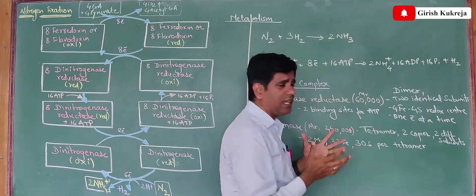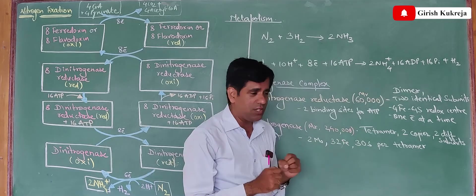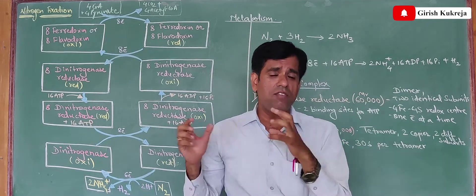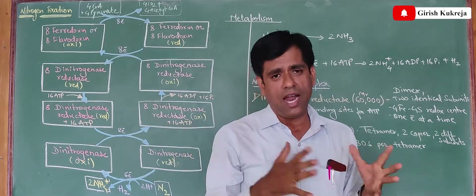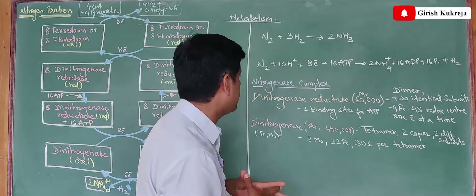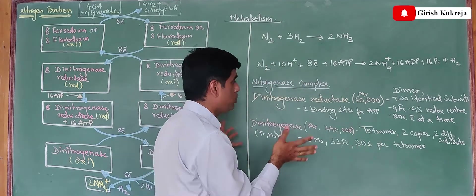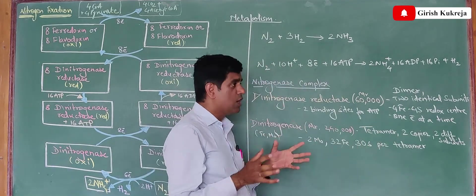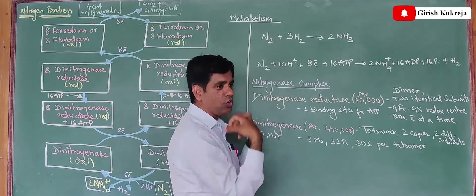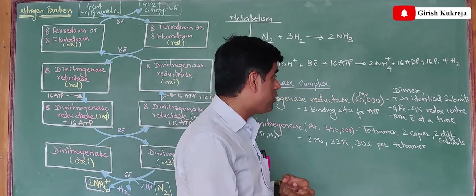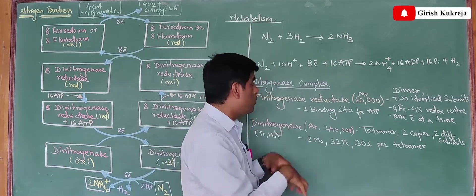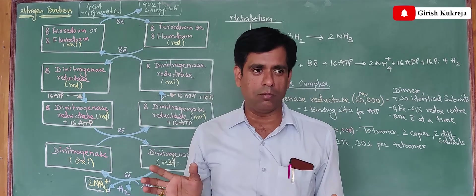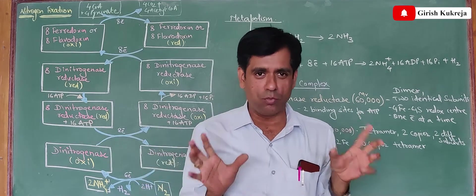It has two identical subunits with iron-sulfur centers which can transfer one electron at a time. This is the place where ATP is going to bind. So as a dimer with identical subunits, it is going to take electrons one at a time and bind two molecules of ATP — it has two binding sites for ATP, one on each subunit.